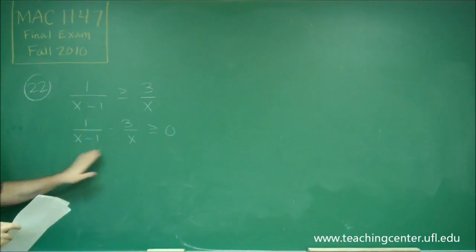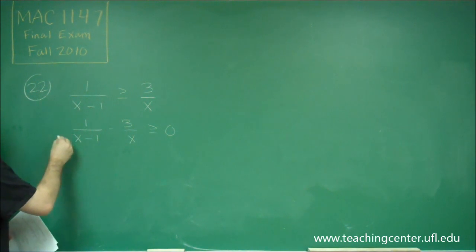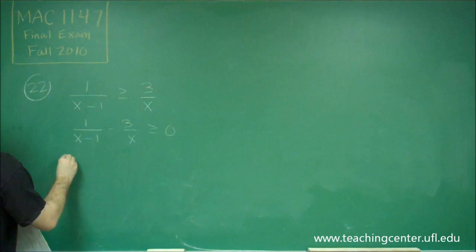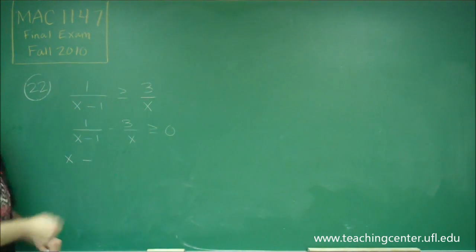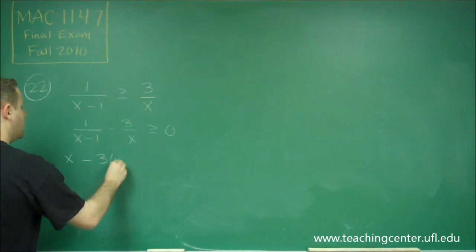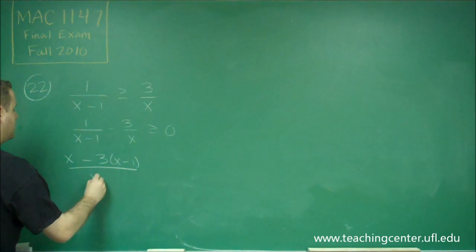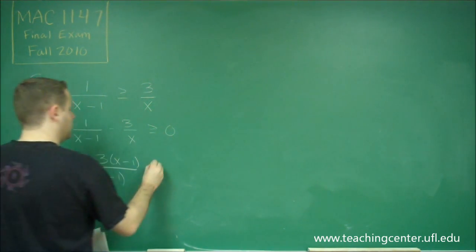Now we can get a common denominator here. To get a common denominator, we need to multiply the first one by x, so we'll have x, and this one we would need to multiply by x minus 1. So we have the 3 that's there times x minus 1, and this is all over x times x minus 1.